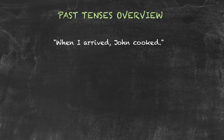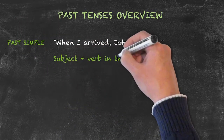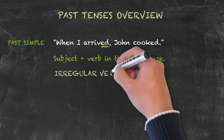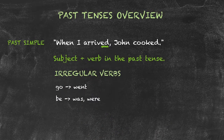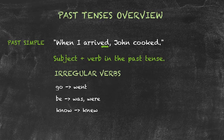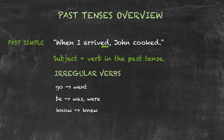In the first example, when I arrived, John cooked. John cooked is the past simple. The structure is quite simply the subject plus verb in the past tense. The past tense verb is usually formed just by adding ed to the end of the base form. However, again, there are many irregular verbs such as go would change to went, be to was or were, know to knew. Again, there are no rules for this and they just have to be learnt individually. The past tense here is used for completed past actions. I arrived in the past and John cooked in the past. They give us the order in which past events happen. I arrived first, and then John cooked. So the past simple is very useful for ordering actions.